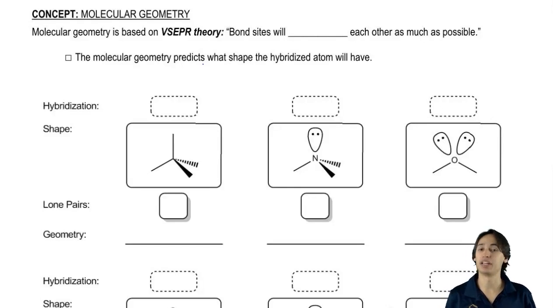So now let's bring this all together talking about molecular geometry and VSEPR theory. VSEPR theory is something you should have learned in Gen Chem and what it basically says is bond sites will repel each other as much as possible.